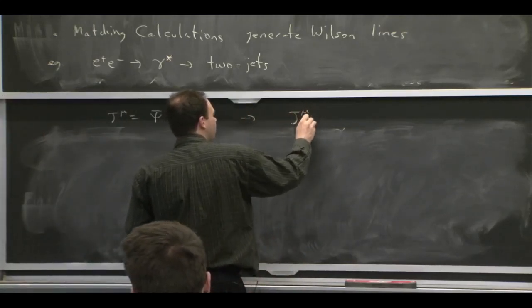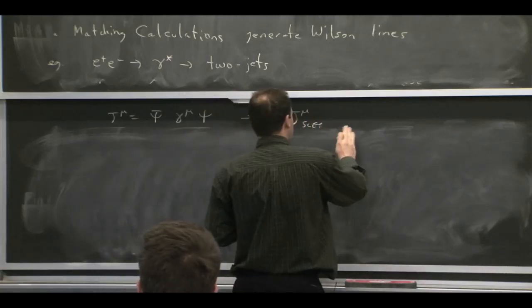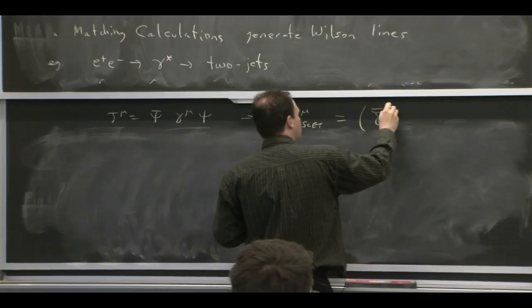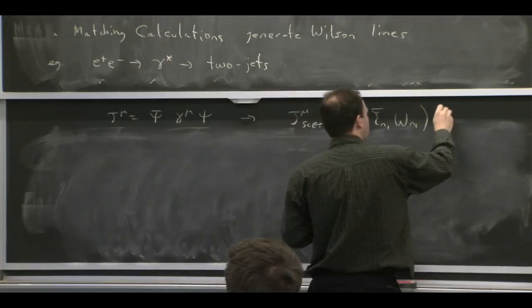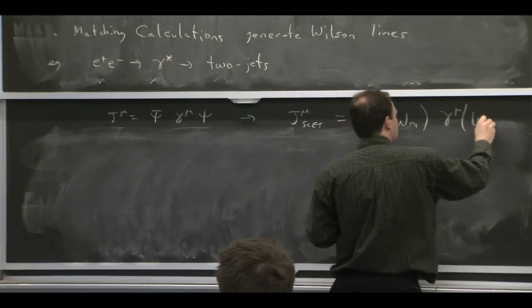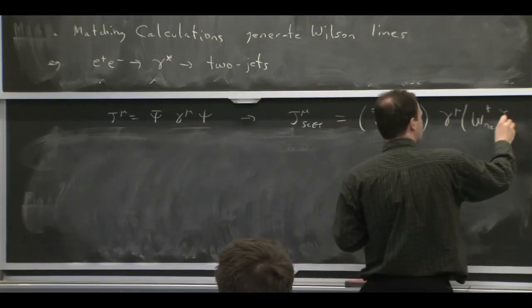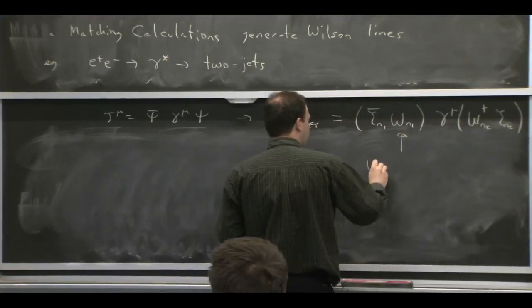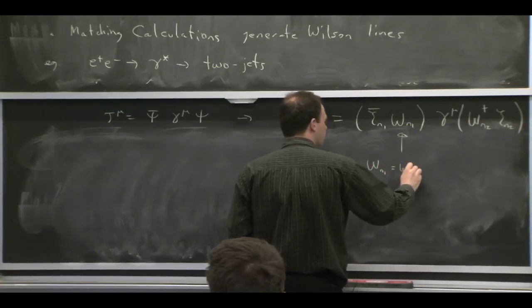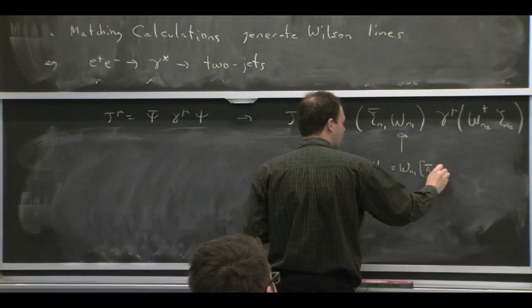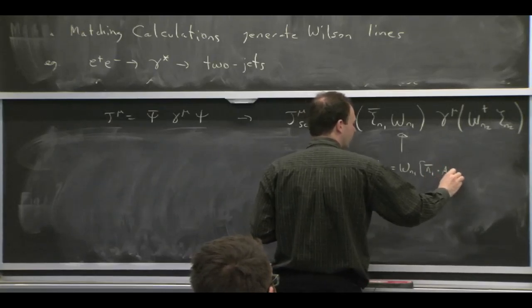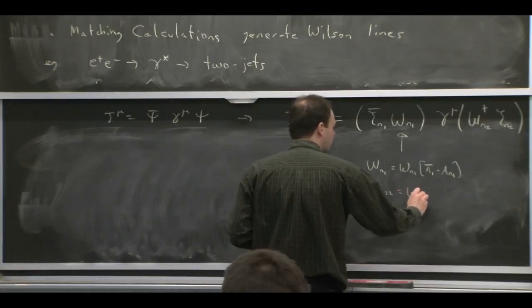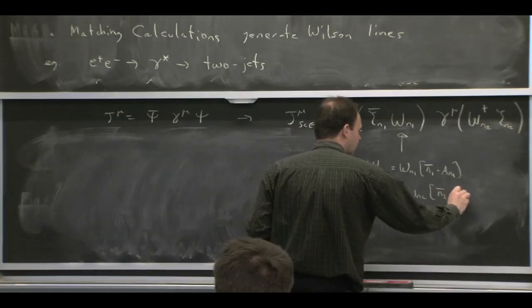So in the full theory, you just have a vector current from the photon. And if you want to match that onto the two jet operator, you can go through the same type of thing that we did when we were doing the Bs to gamma example. And the difference is here that we get two different types of Wilson lines.